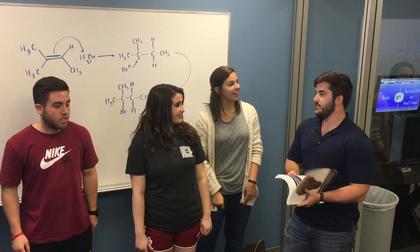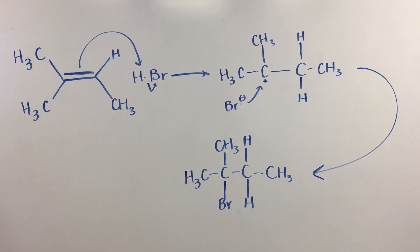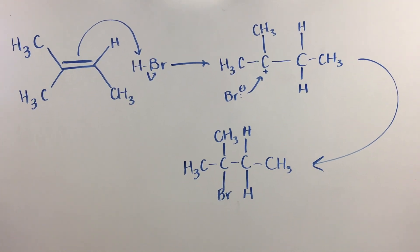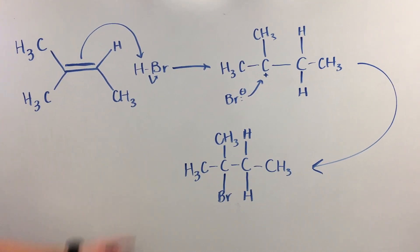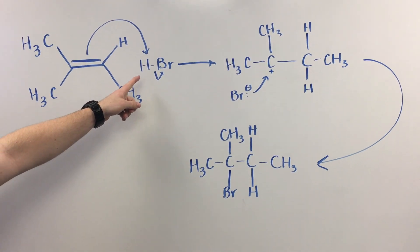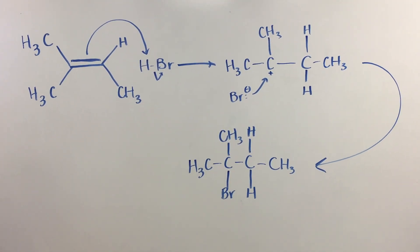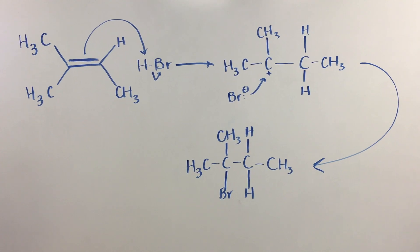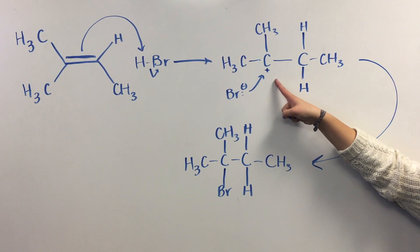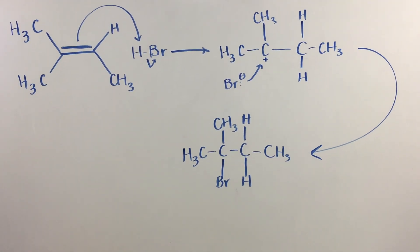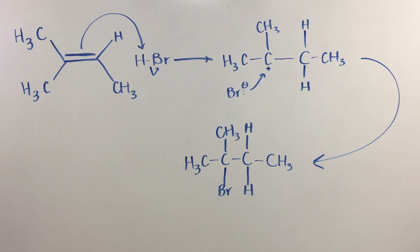Alkenes can undergo addition reactions. The first step is an electrophilic addition to the double bond. An electrophile is an ion or molecule that can accept electrons to form a bond. In this example, hydrogen is the electrophile because it has a partial positive charge from being bonded to bromine, which is electronegative. The double bond then becomes a single bond due to the addition of the electrophile, creating a carbocation — a carbon with a partial positive charge — because the carbon has less than four bonds. This partial positive charge will attract a nucleophile such as bromine. A nucleophile is an electron-rich ion or molecule that wishes to make a bond with a positively charged atom.